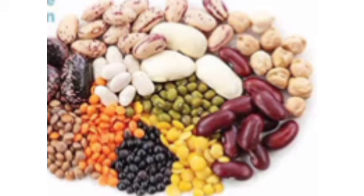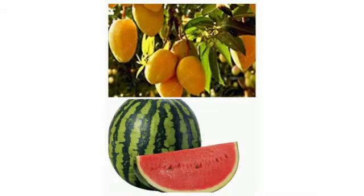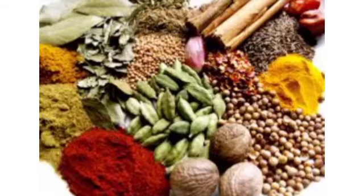Corn, pea and bean — seeds we eat. Seeds of fruits we do not eat include mango and apple. Spices are also seeds — mustard, cumin and methi. We keep these seeds in our kitchen.